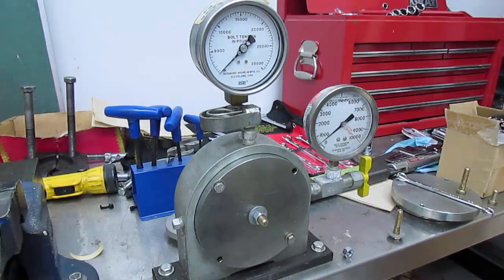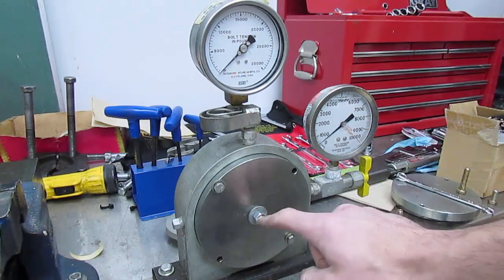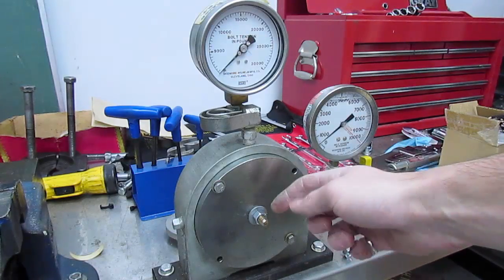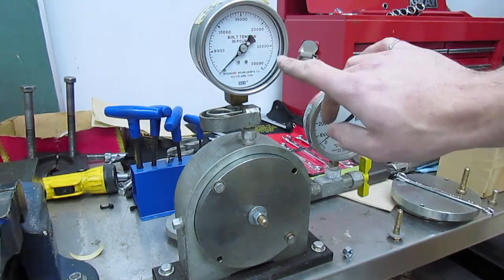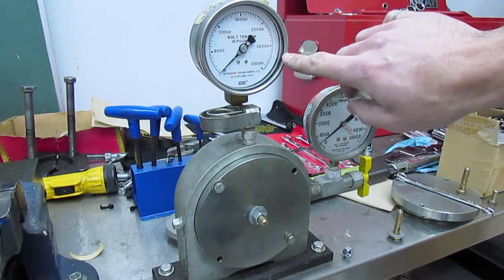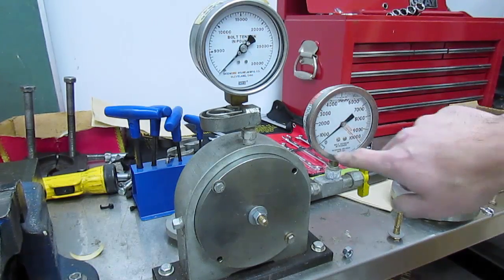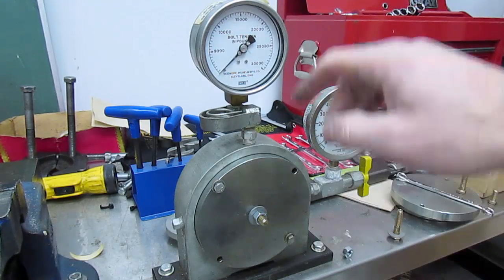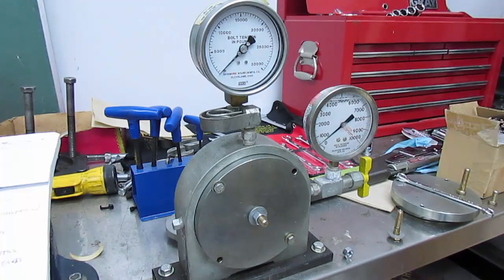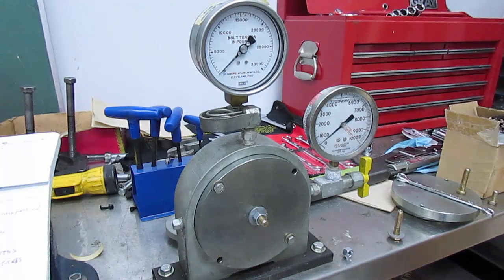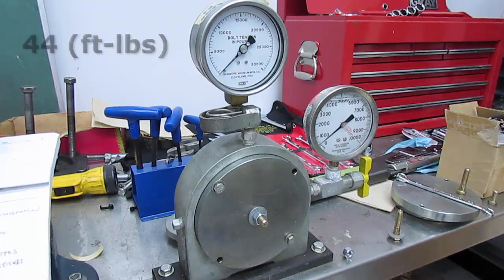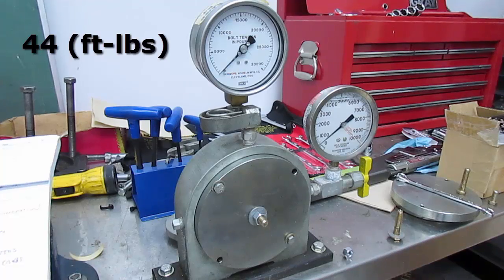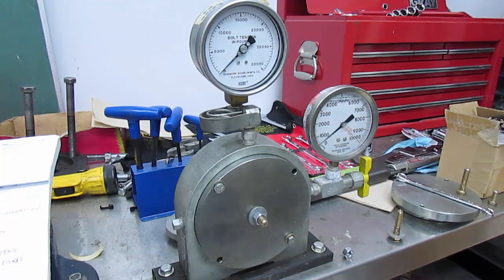Okay, so I have the 3/8 inch bolt set up right here and I have the nut here, and this is going to simulate your wheel stud and your lug nut. Up here you can see the bolt tension rating in pounds, and you have a second gauge here also just a different scale in pounds. So when I torque this nut you're going to see the bolt tension increase. So we're going to begin by dry torquing the first bolt to 44 foot-pounds, which is the dry torque rating for a grade 8, 3/8 inch fastener.